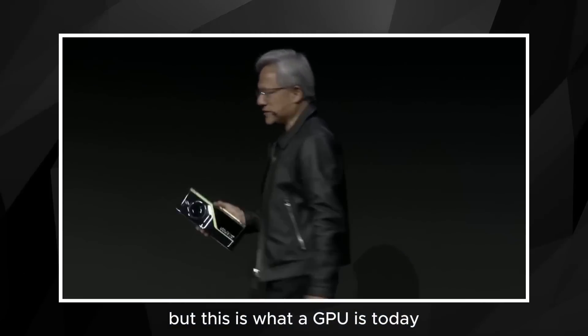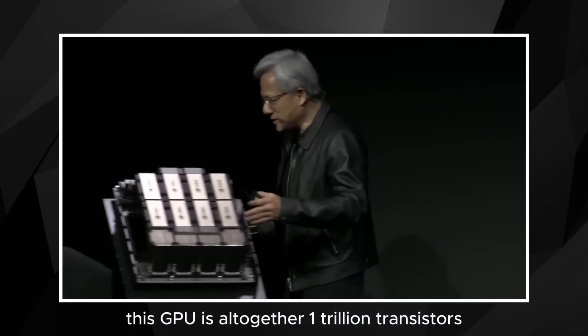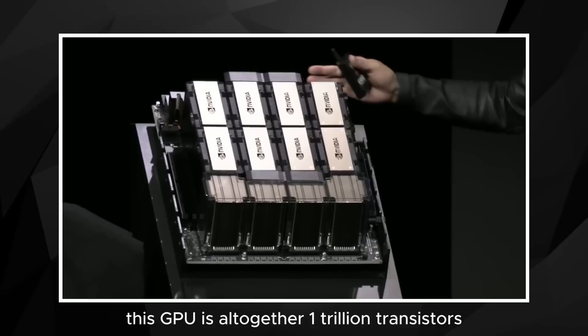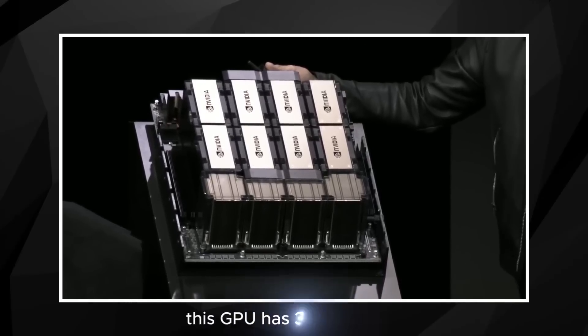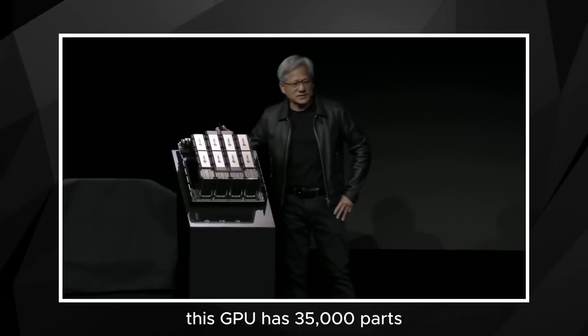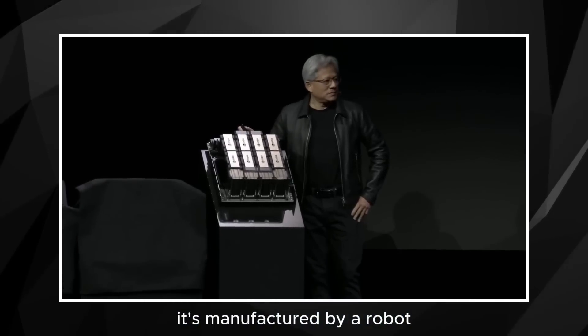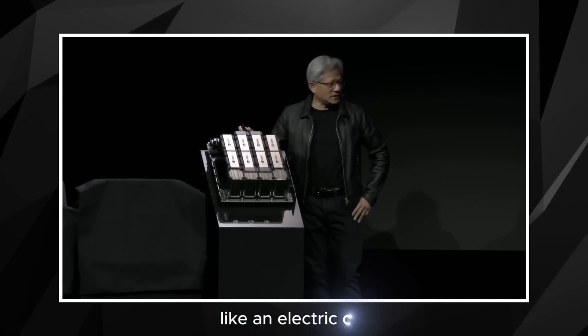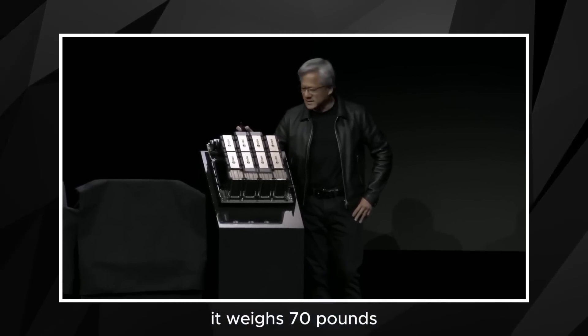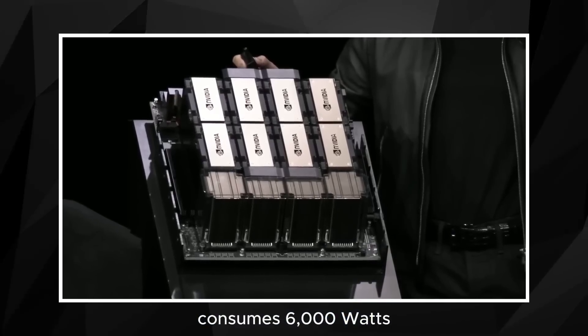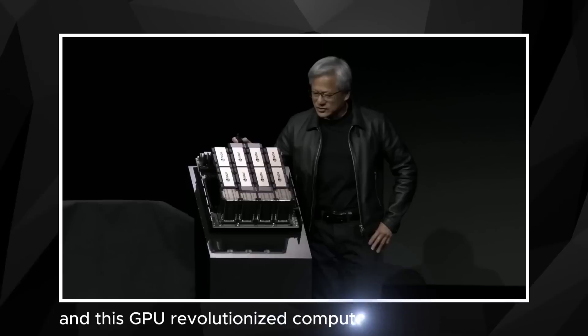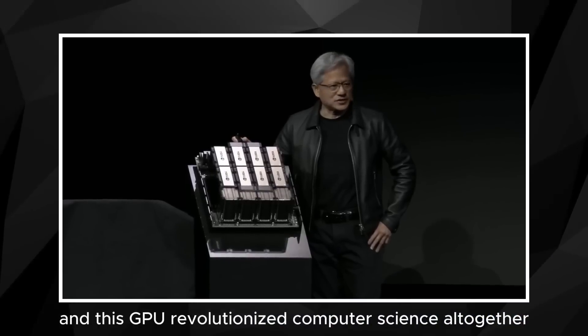But this is what a GPU is today. This GPU is altogether one trillion transistors. This GPU has 35,000 parts. It's manufactured by a robot like an electric car. It weighs 70 pounds, consumes 6,000 watts, and this GPU revolutionized computer science altogether.